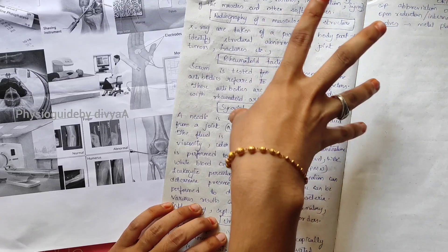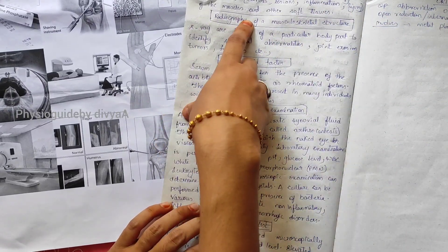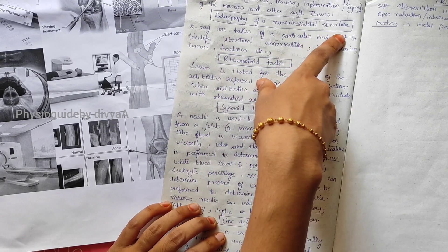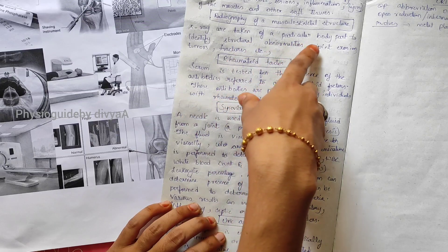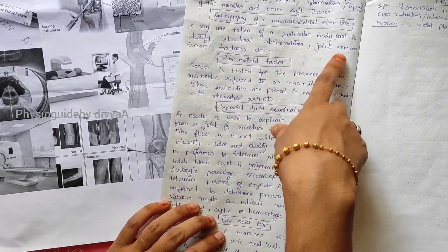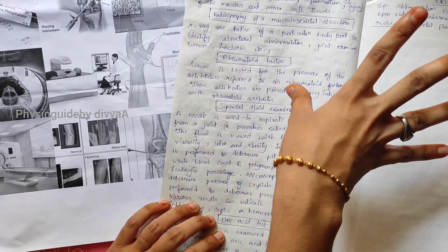X-ray of musculoskeletal structures is used for a particular body part to identify abnormalities. Joint erosions, tumors, and fractures can be identified. X-ray is taken first mainly.